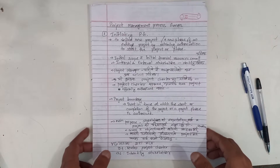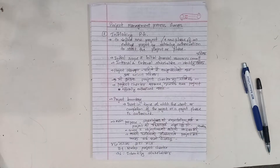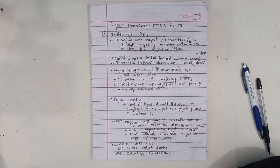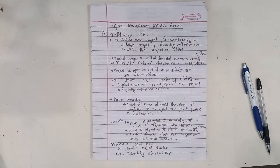Welcome back. This is the Project Management Process Group. The Project Management Process Groups are: initiating, planning, executing, monitoring and controlling, and closing. Let's learn about this.